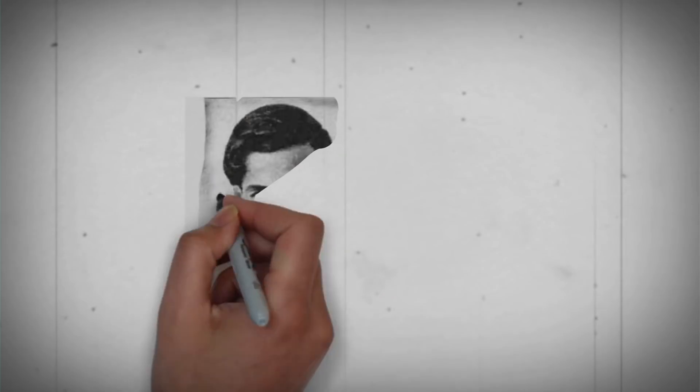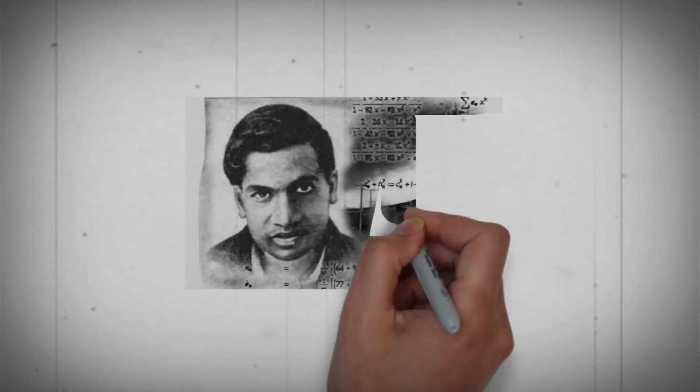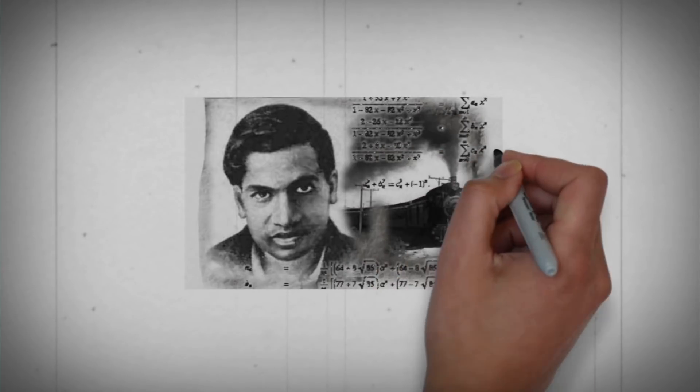Ramanujan also studied the highly composite numbers which are recognized as the opposite of prime numbers. He studied their structure, distribution and special forms.